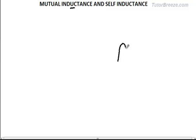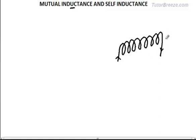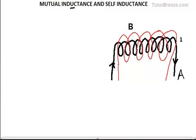We will first begin with mutual inductance. To get an idea of what mutual inductance is, let's look at this pair of circuits. We have a coil with N1 turns through which a current flows — we will call this coil 1, and it is part of circuit A. We have another coil placed around the first coil, and this is part of circuit B — let's call this coil 2.